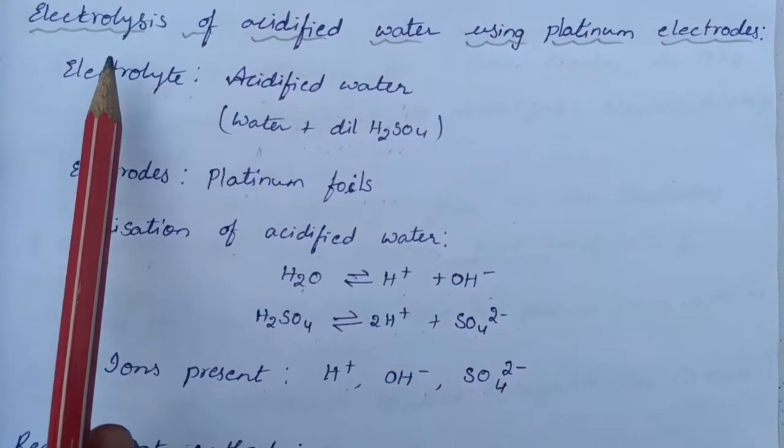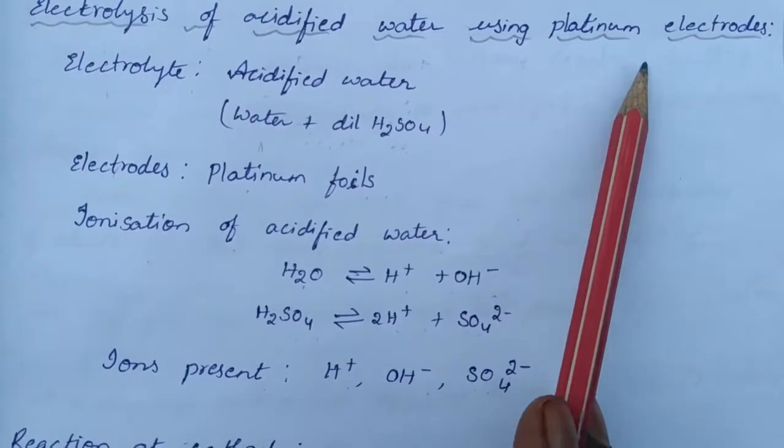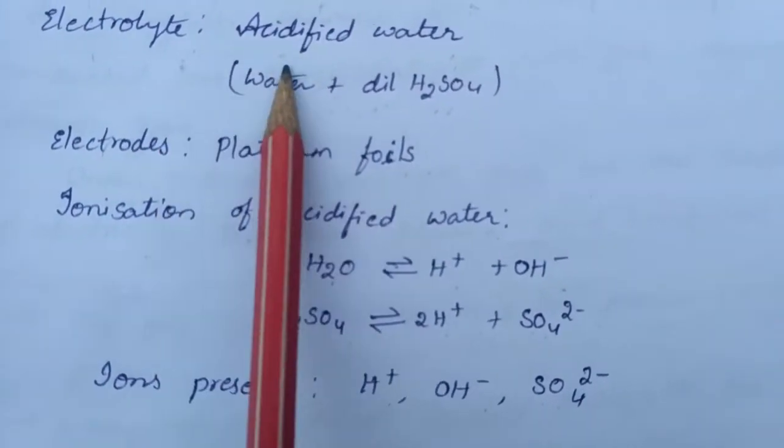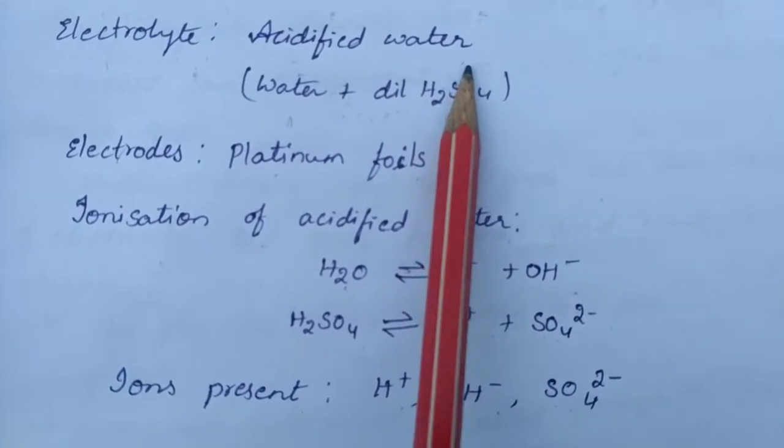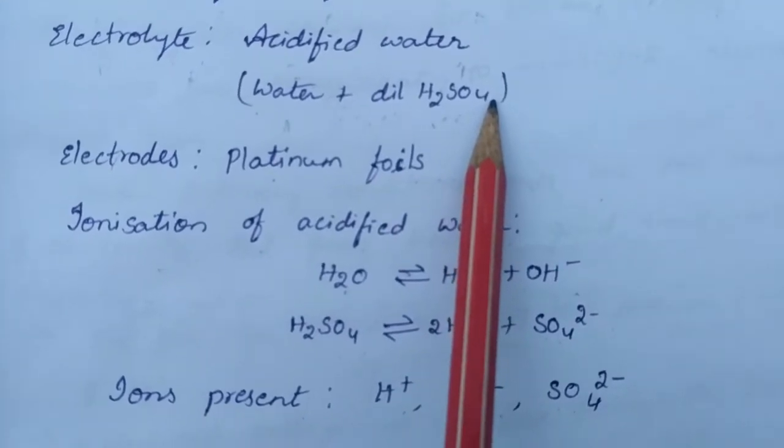Good morning students. Today we will discuss the electrolysis of acidified water using platinum electrodes. The electrolyte which we are going to use is acidified water, which contains water and dilute sulfuric acid. We don't prefer other acids.